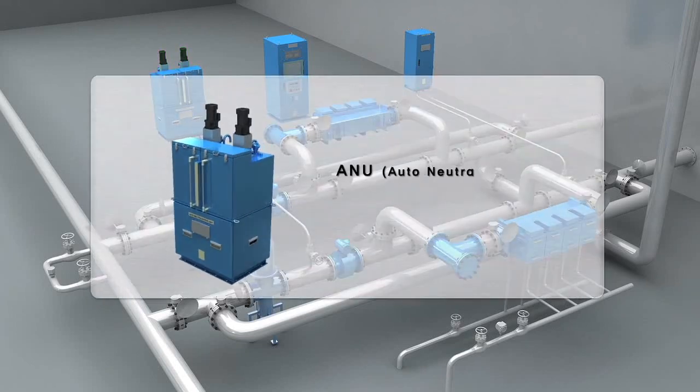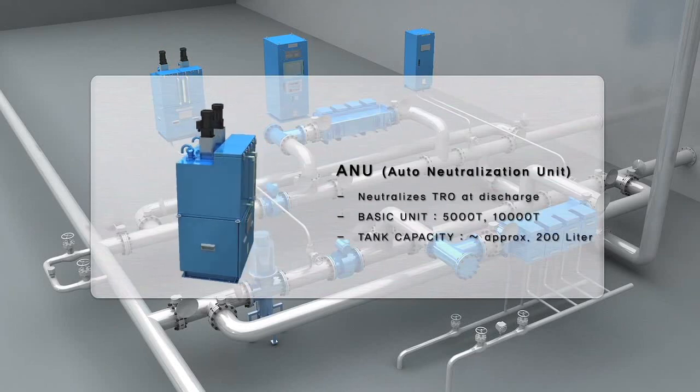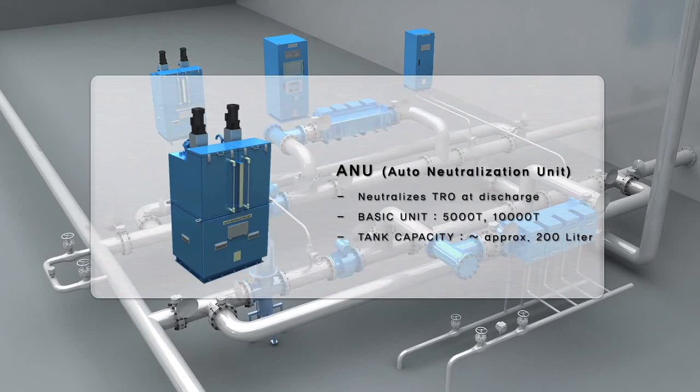ANU is designed to neutralize any remaining residual TRO prior to discharge. It is used during deballasting and stripping only.